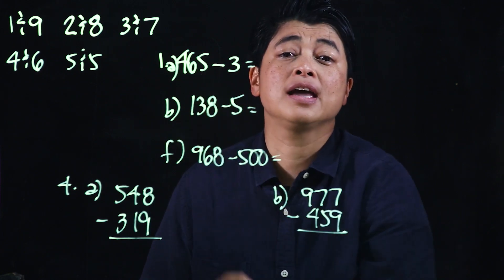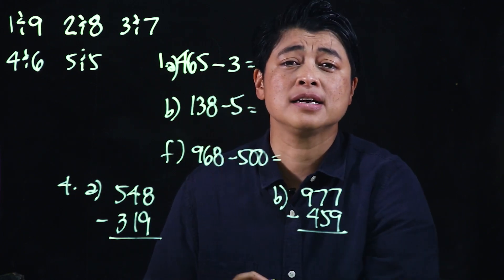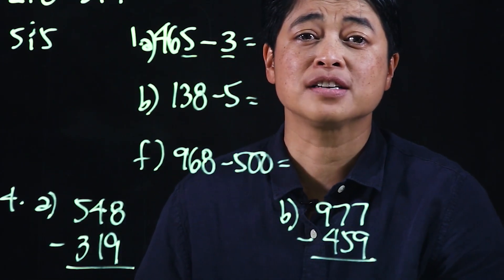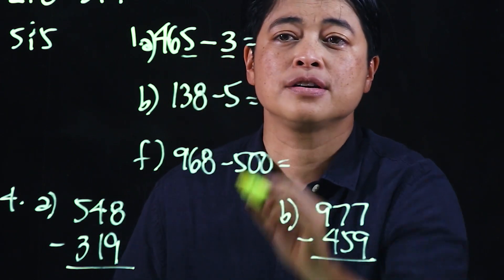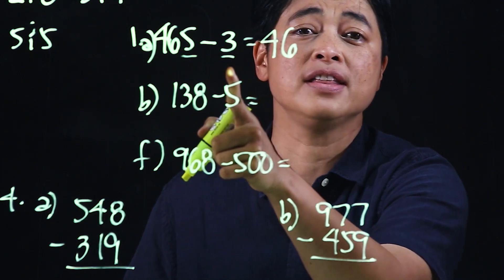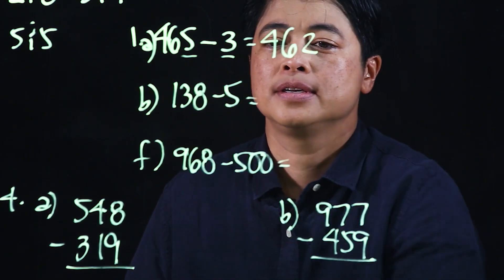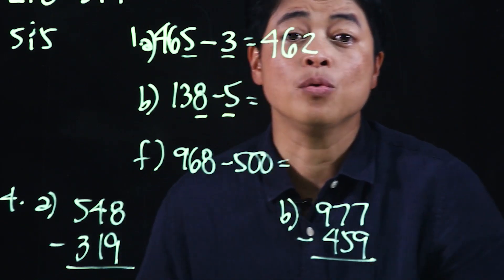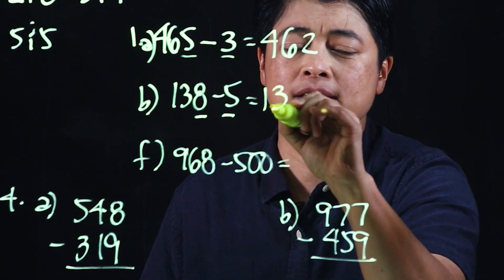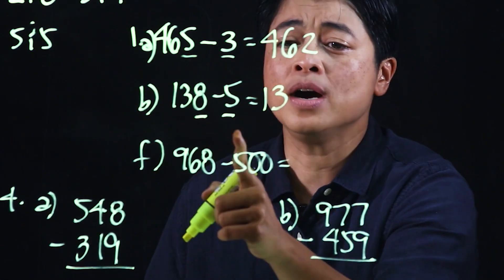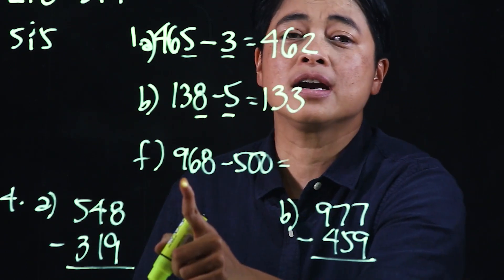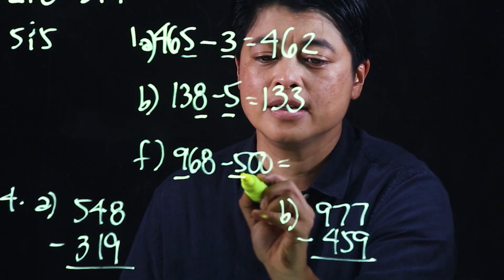Mental math again means only a single place value subtraction. So clearly here it's the ones that we are subtracting. The hundreds and the tens remain the same — 4 and 6 — and then we subtract 5 and 3, which is 2. Next, again it's only the ones that we are subtracting, so the hundreds and the tens stay the same, but the ones we subtract, making it 3.